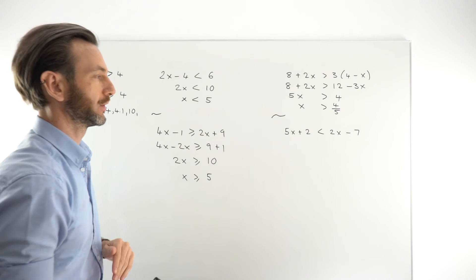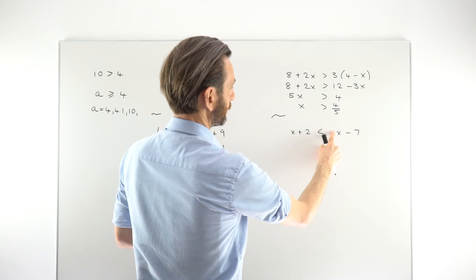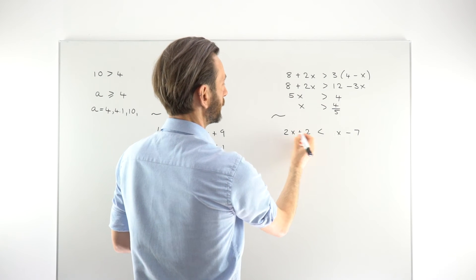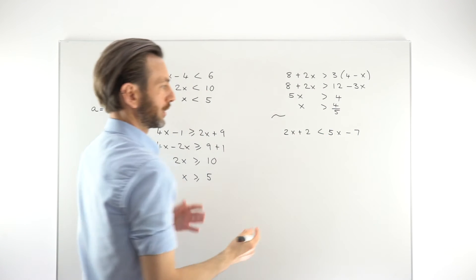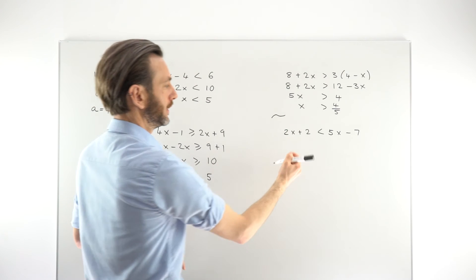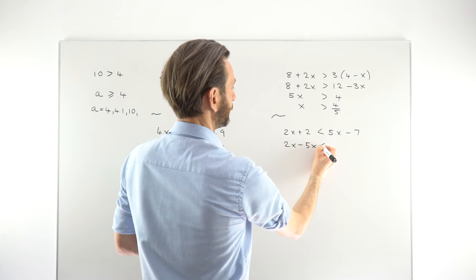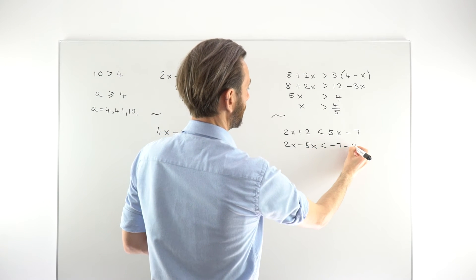So in this question, actually, let's spin these numbers around. Put a 2 there and put a 5 there, so that we're going to force it to give us a negative number. So if we take the x's to the left, we're going to have 2x minus 5x is less than minus 7 minus 2.